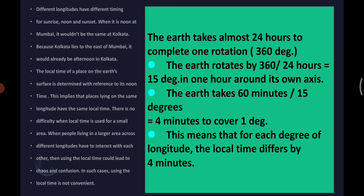If the longitudes are in the east of that particular longitude, then the local time will be 4 minutes ahead, and 4 minutes behind if the longitudes lie to the west. By multiplying the difference between longitudes in degrees by 4 minutes, the difference between the local time of any two longitudes can be calculated.